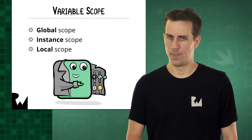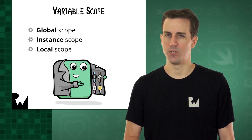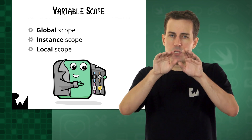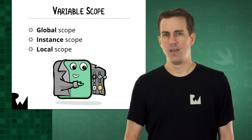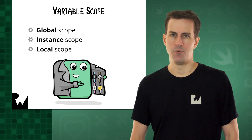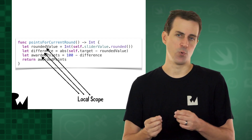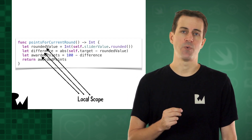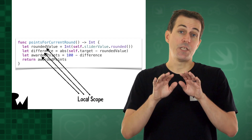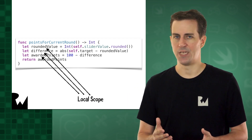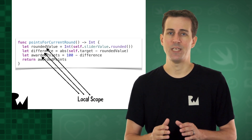Finally, there's local scope. Objects with a local scope — such as the roundedValue constant you created in pointsForCurrentRound — only exist for the duration of that method. As soon as execution leaves the method, the local objects are no longer accessible. Because roundedValue, difference, and awardedPoints constants are created inside the method, they only have local scope. They come into existence when pointsForCurrentRound is called, and they cease to exist when the method is done. When there are no more statements for it to execute, the computer destroys those constants and their storage space is cleared out.